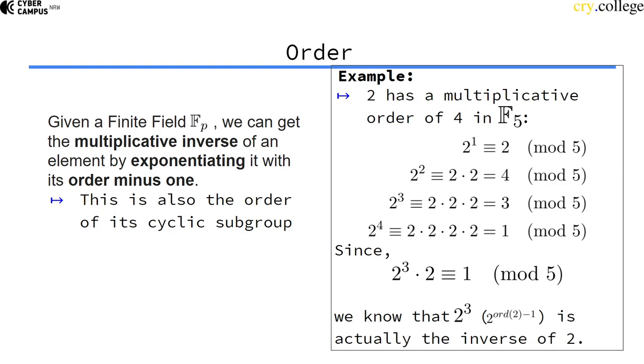So by that, we know that 2 to the power of 3 is the inverse, because if we multiply it by 2, we get the identity element. This translates to all elements: if we take an element and exponentiate by its order minus 1, we get the inverse of that element, because the element exponentiated by its order would be 1.